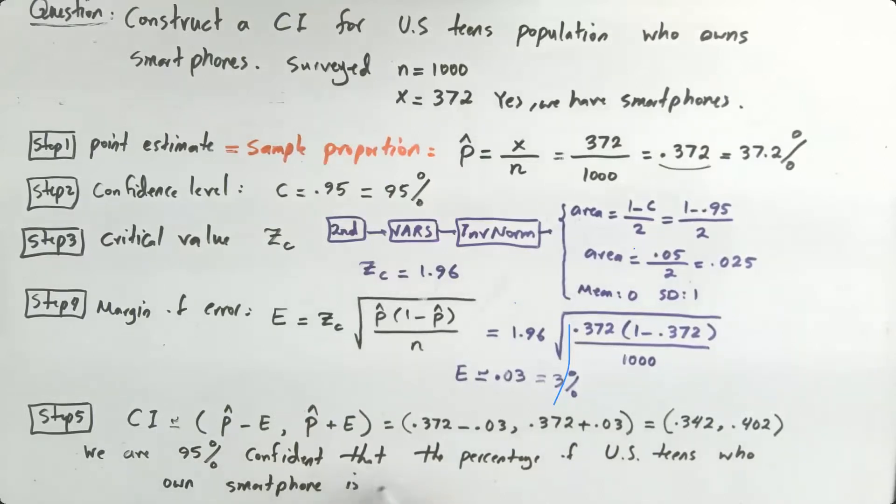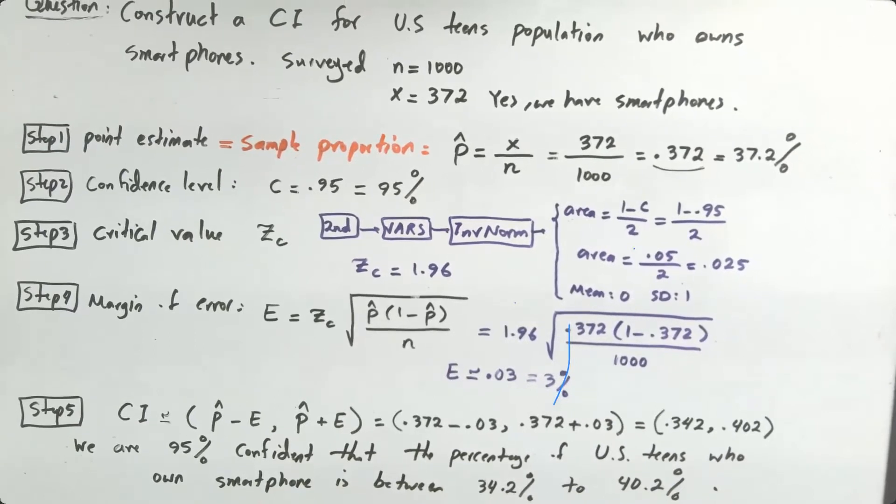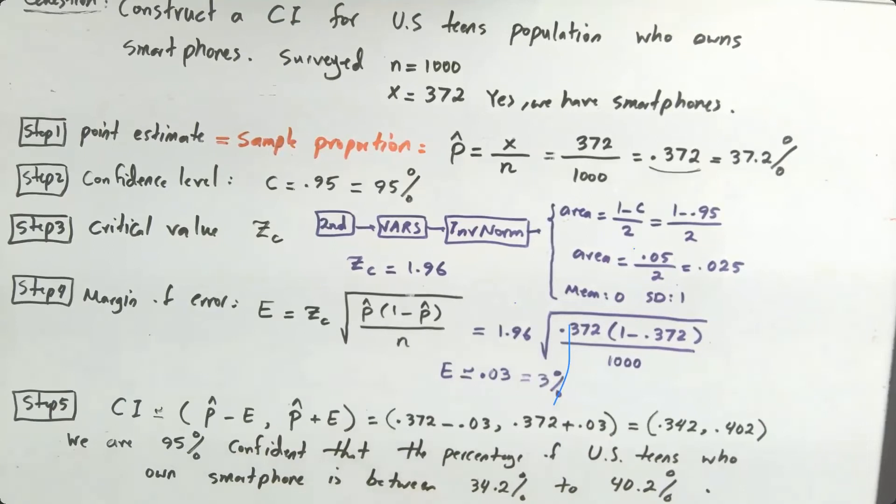of US teens who own smartphones is between 34.2 percent to 40.2 percent. So this is our very last stop. When you are writing a statistical analysis